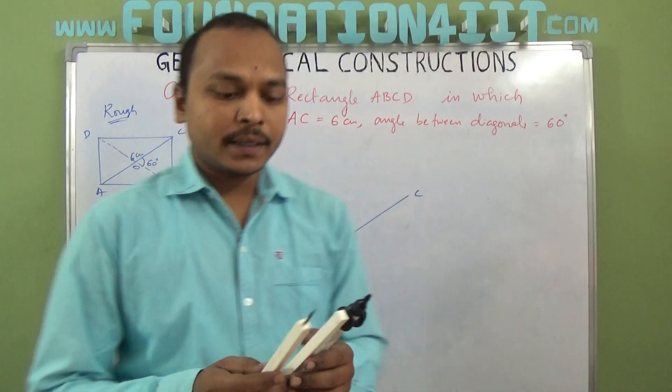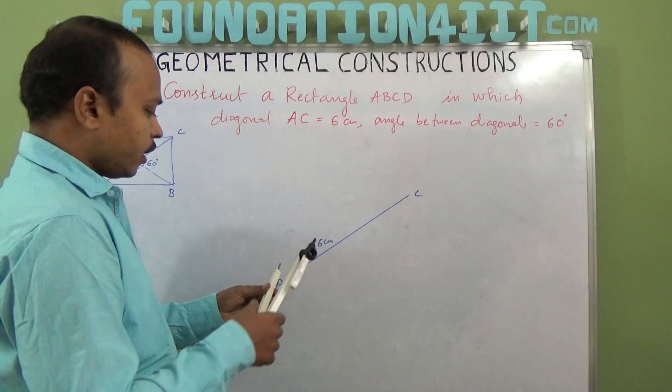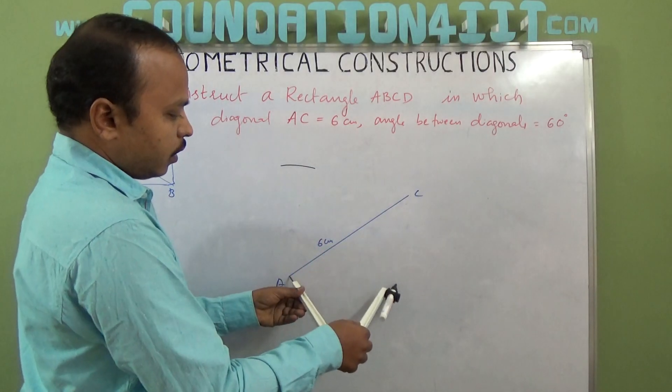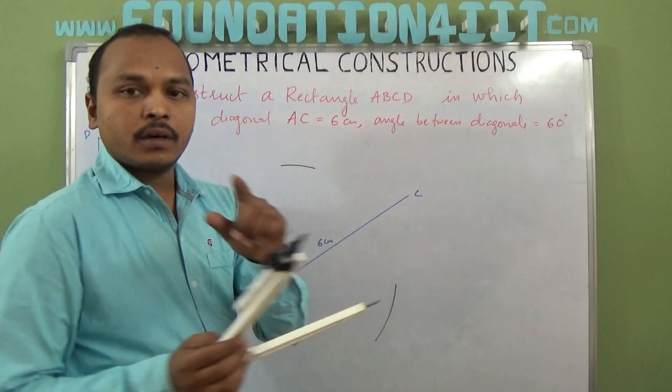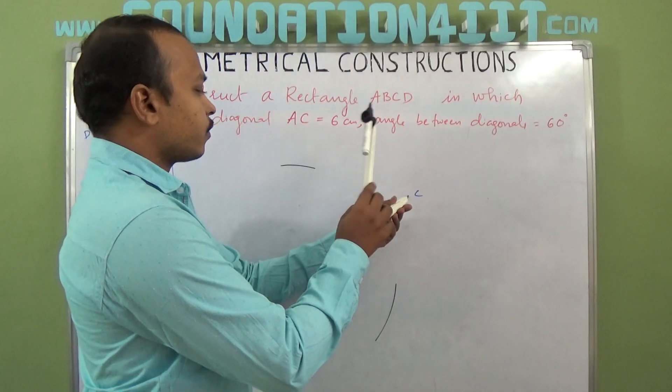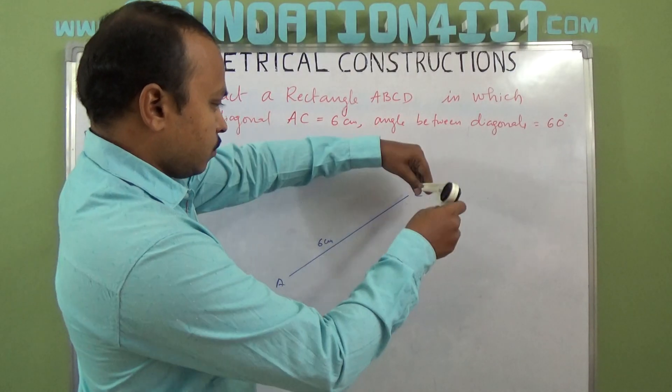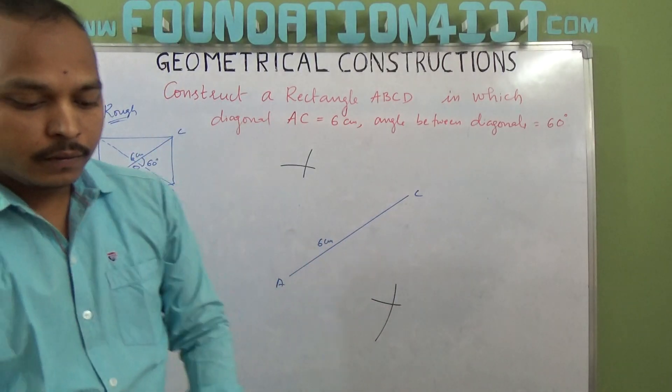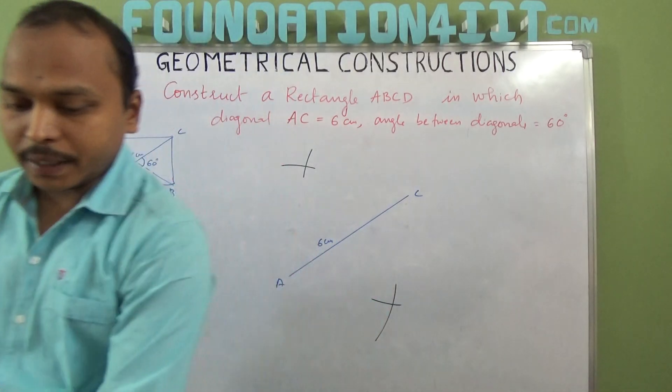When you want to find out the midpoint of AC, we need to bisect it. Take more than half and draw an arc above and below, and with same radius draw an arc from C also. First of all, we need to do perpendicular bisecting of AC.